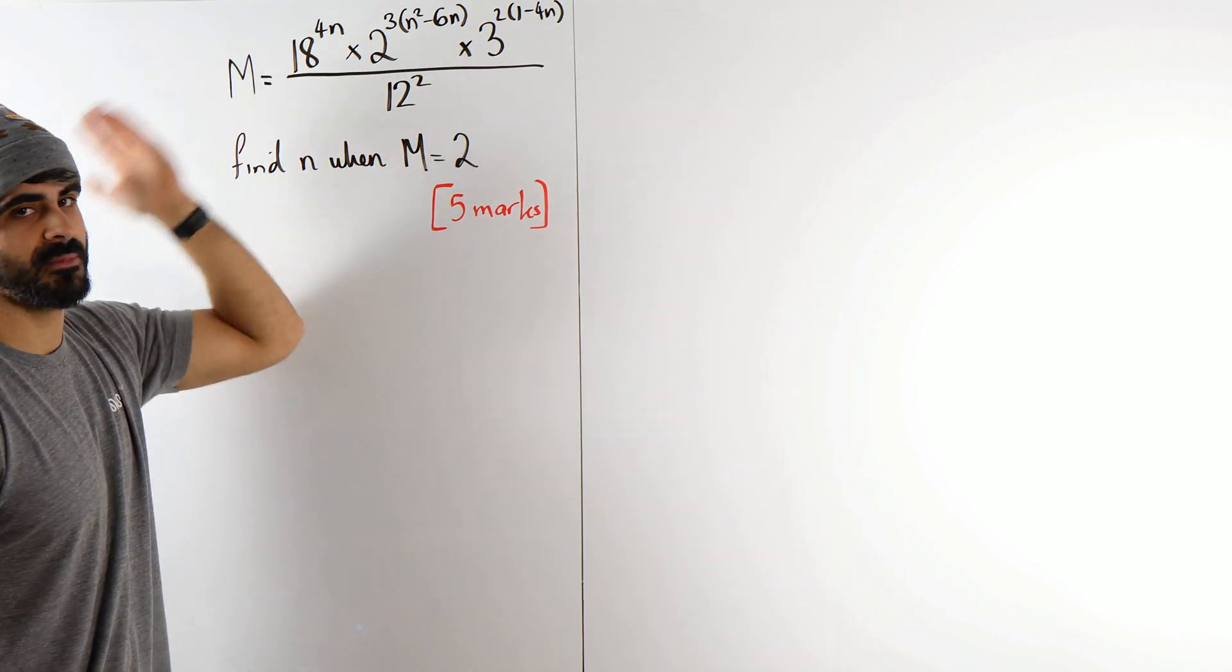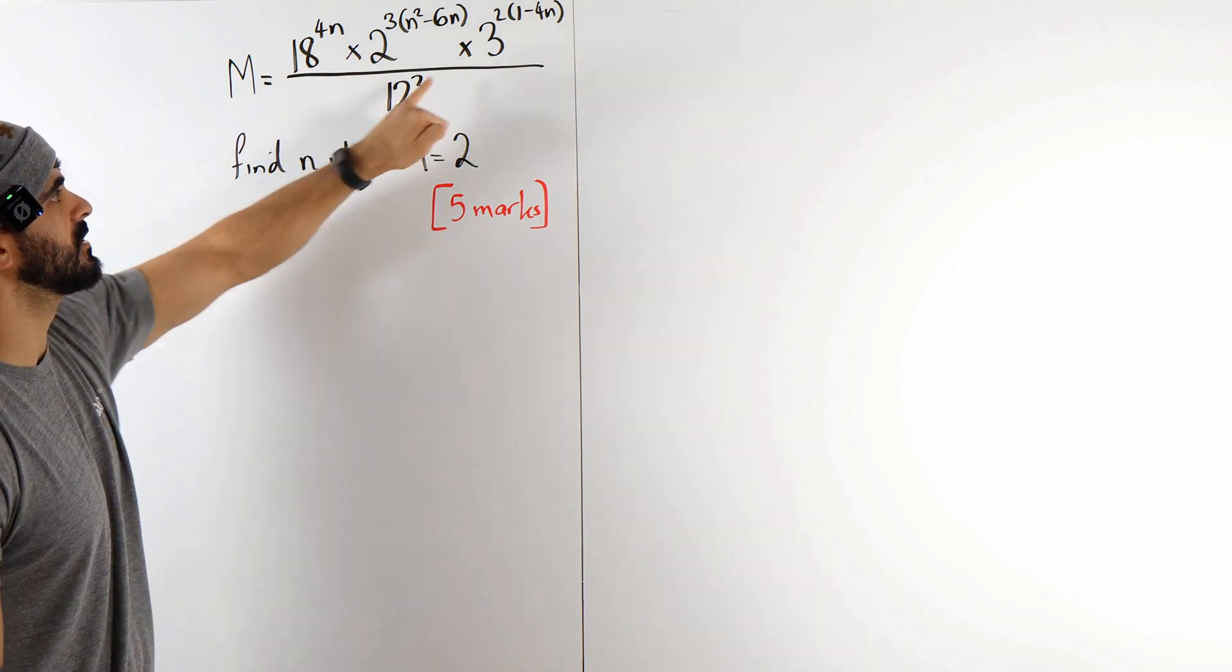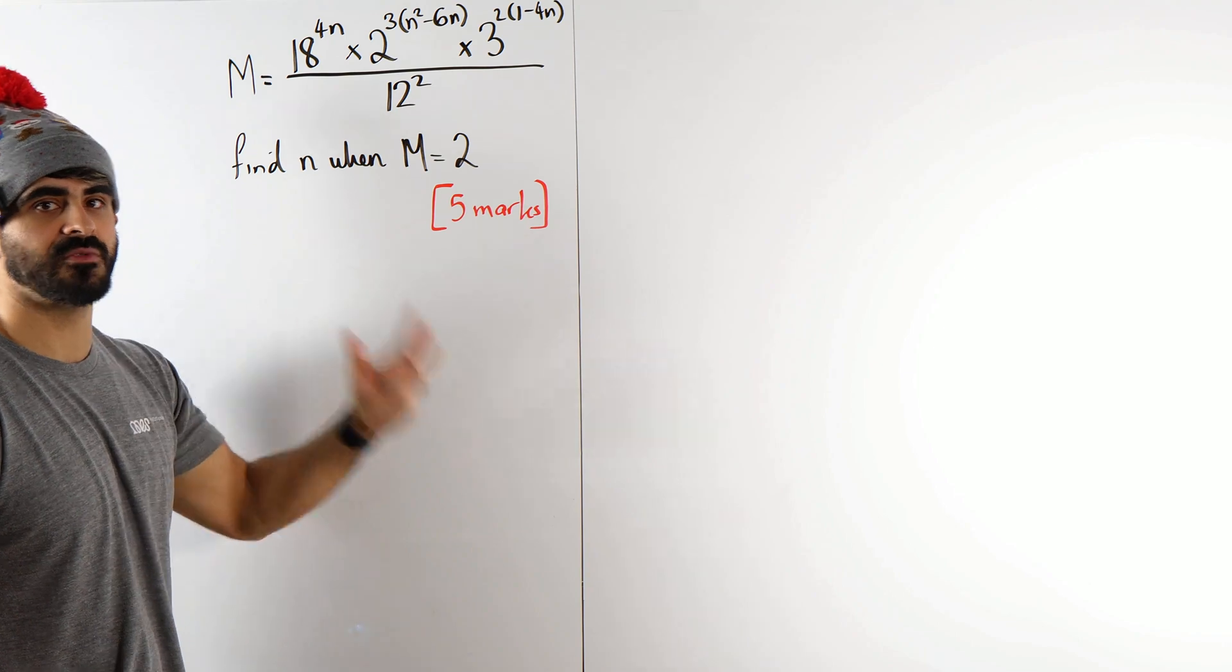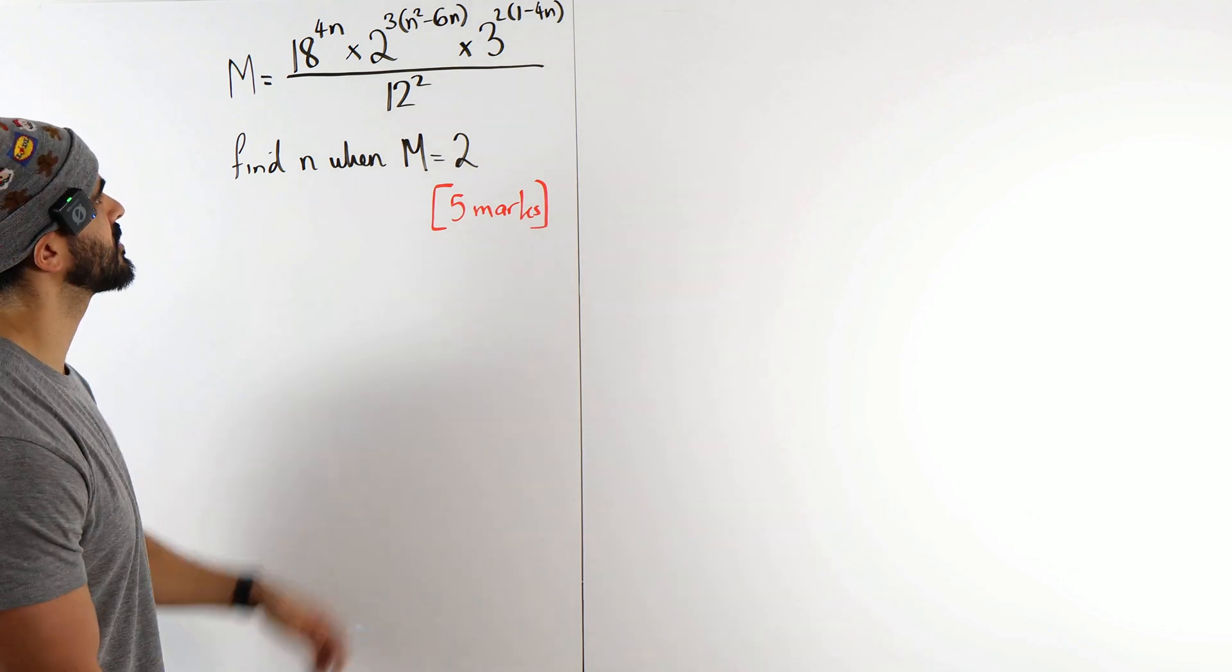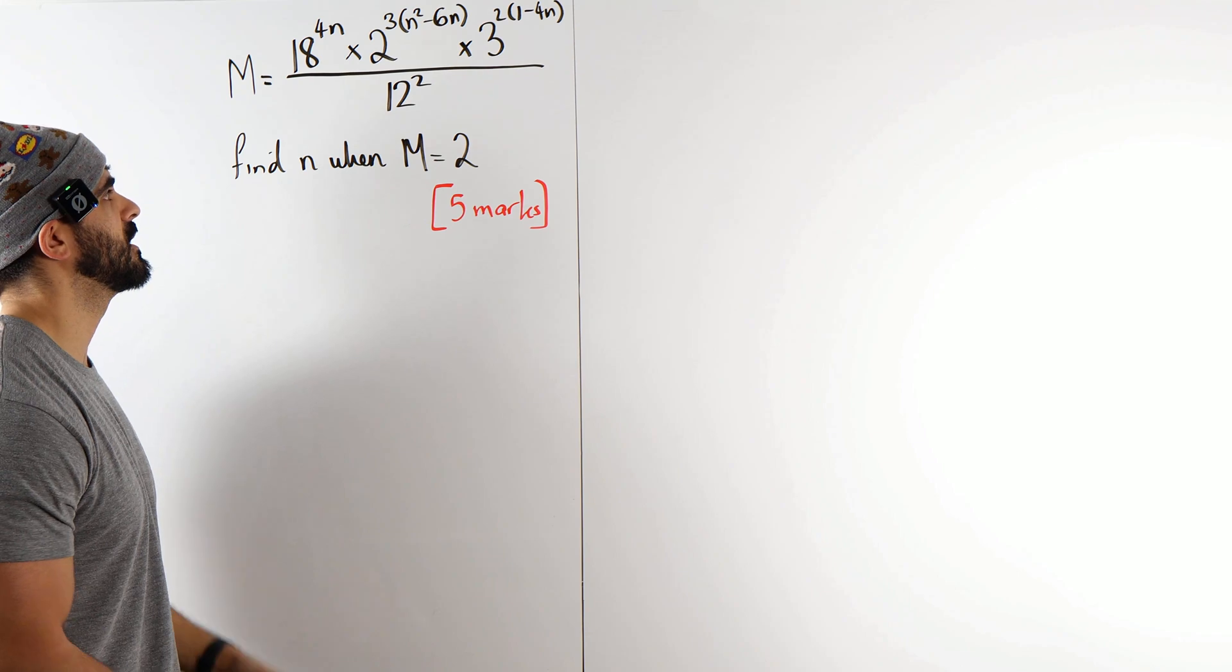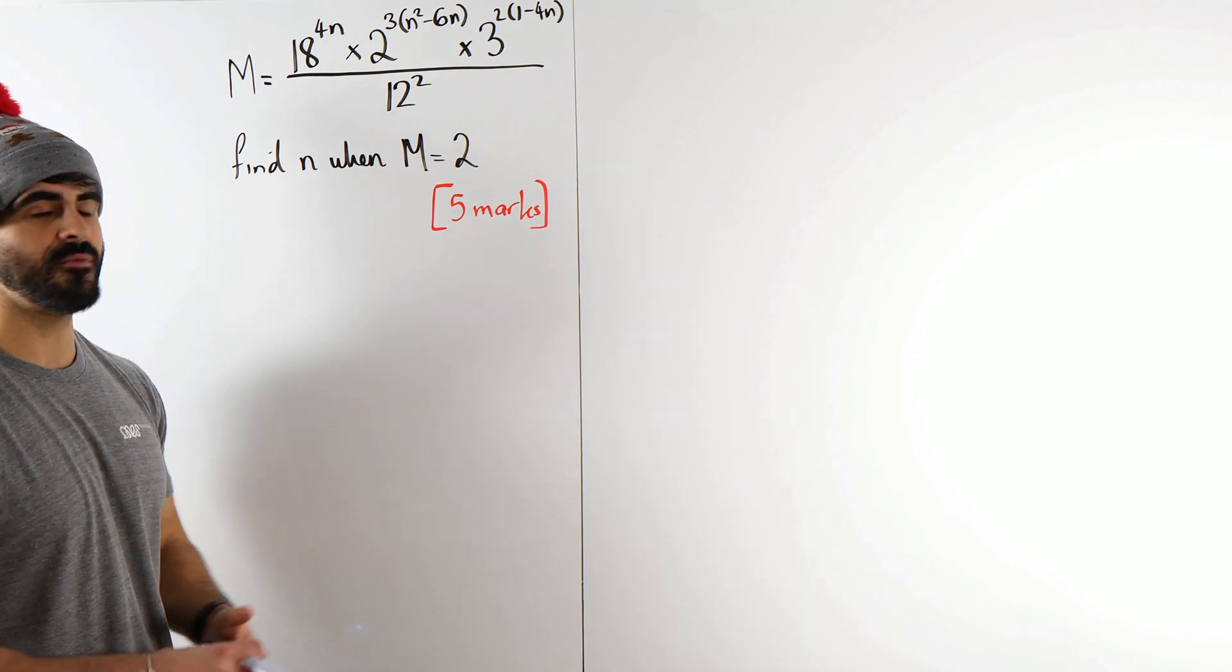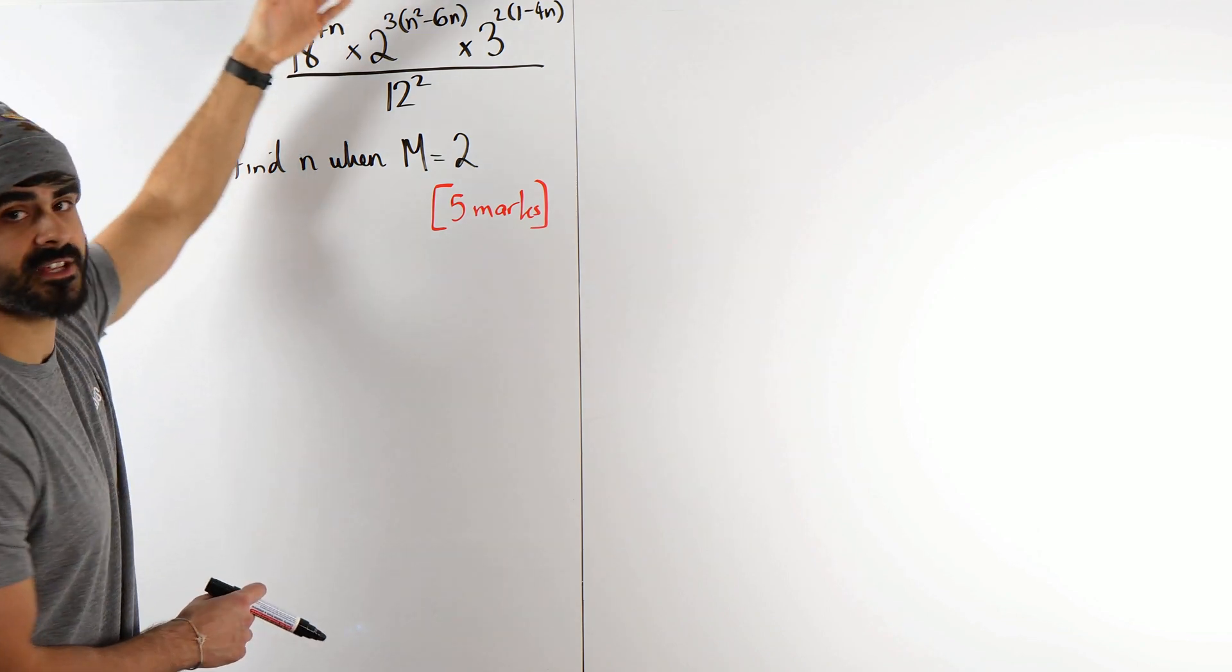Now, usually it's much easier because if you have 2 here, you would have like 16, 4 and 8 and you can rewrite everything as a power of 2. But in this case, you have 2 and 3, 18 and 12.